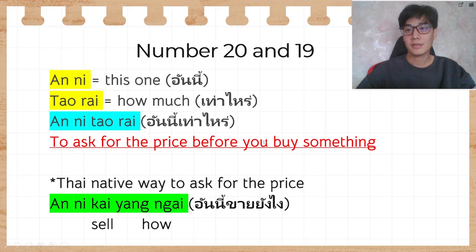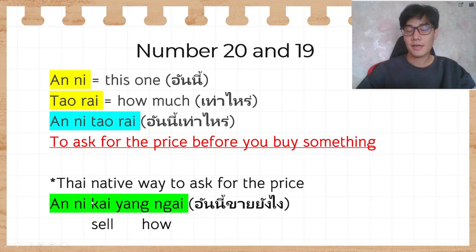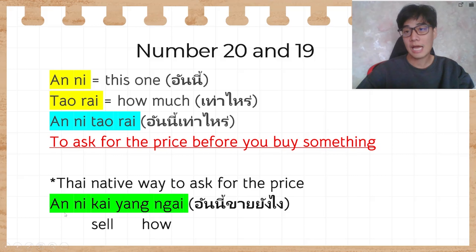They will tell you the number — สิบบาท, ยี่สิบบาท, สามสิบห้าบาท — whatever number it is. When I ask for the price, I usually use อันนี้ขายยังไหร่. ขาย means 'sell' and ยังไหร่ means 'how,' so อันนี้ขายยังไหร่ has the same meaning as อันนี้เท่าไหร่, but this is the Thai native way to ask for the price.